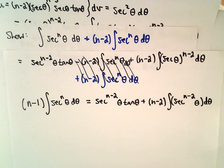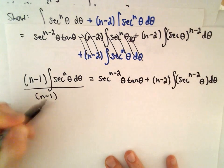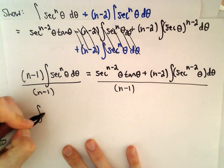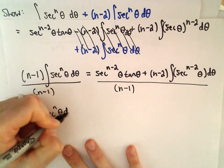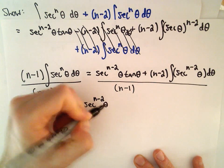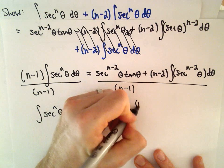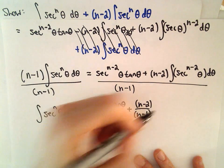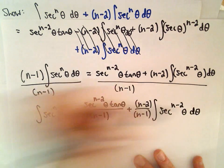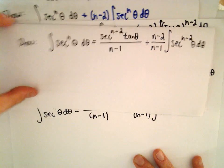Now we are basically there. All we need to do is divide both sides by (n-1). On the left side we're left with ∫sec^n(θ)dθ. On the right side we have sec^(n-2)(θ)·tan(θ) divided by (n-1), plus (n-2)/(n-1) multiplied by the integral of sec^(n-2)(θ)dθ. And that's exactly what we were originally setting out to get — we've got it.